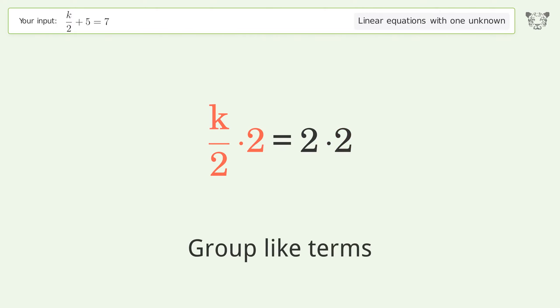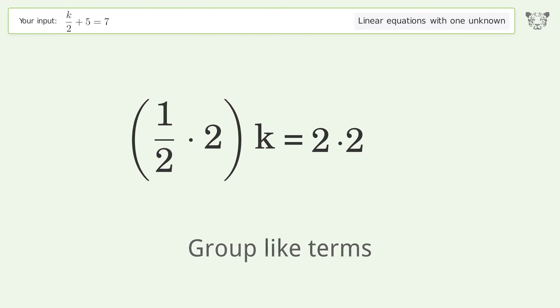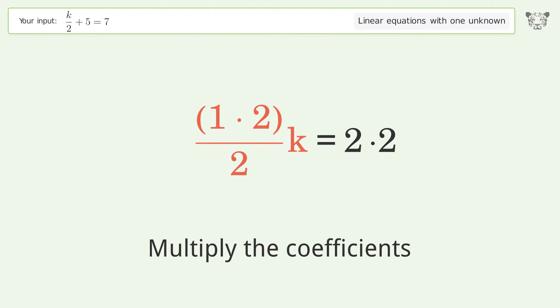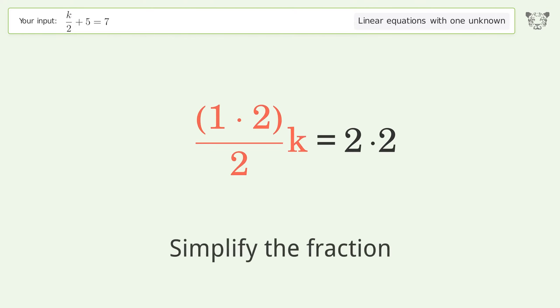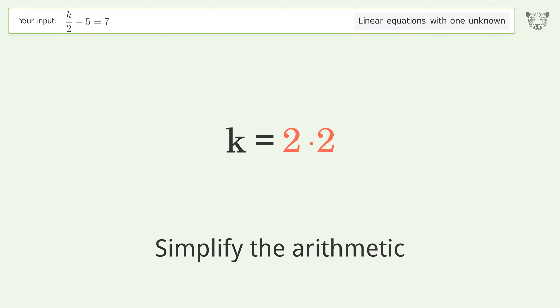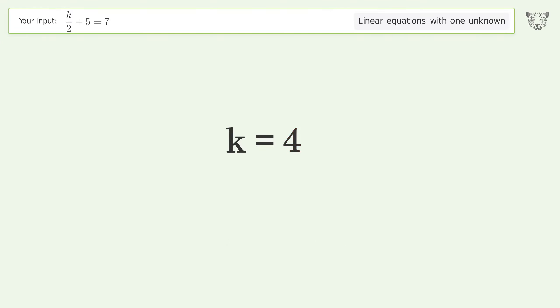Group like terms, then multiply the coefficients. Simplify the fraction and simplify the arithmetic. And so the final result is k equals 4.